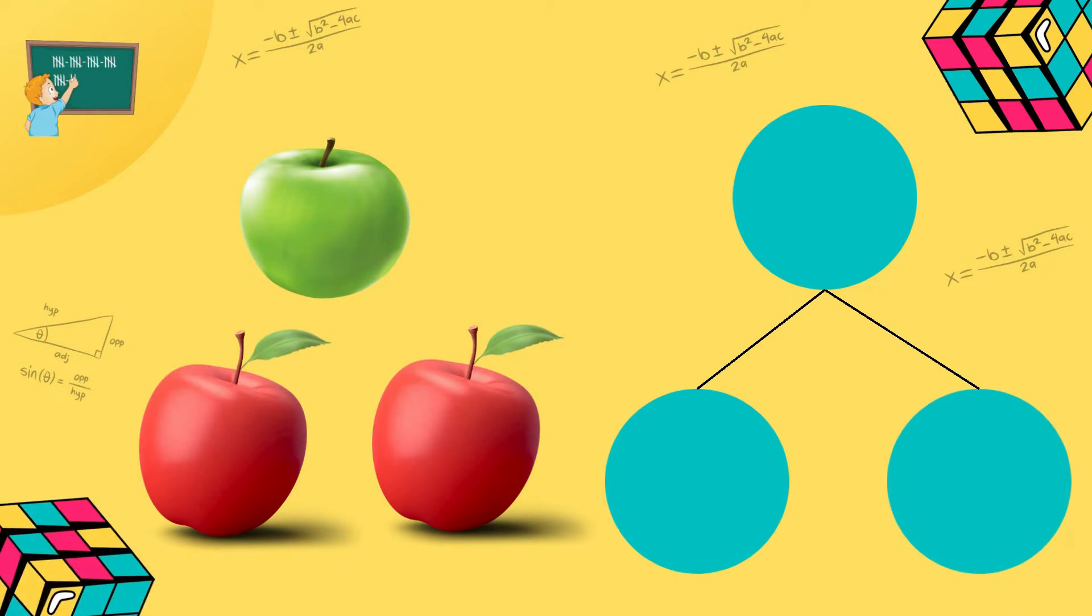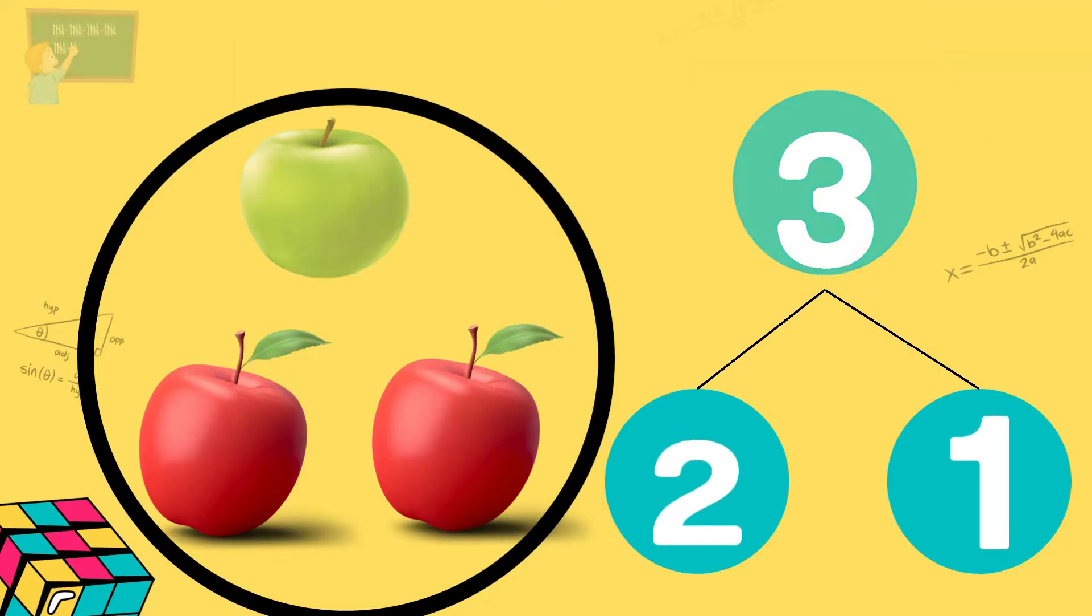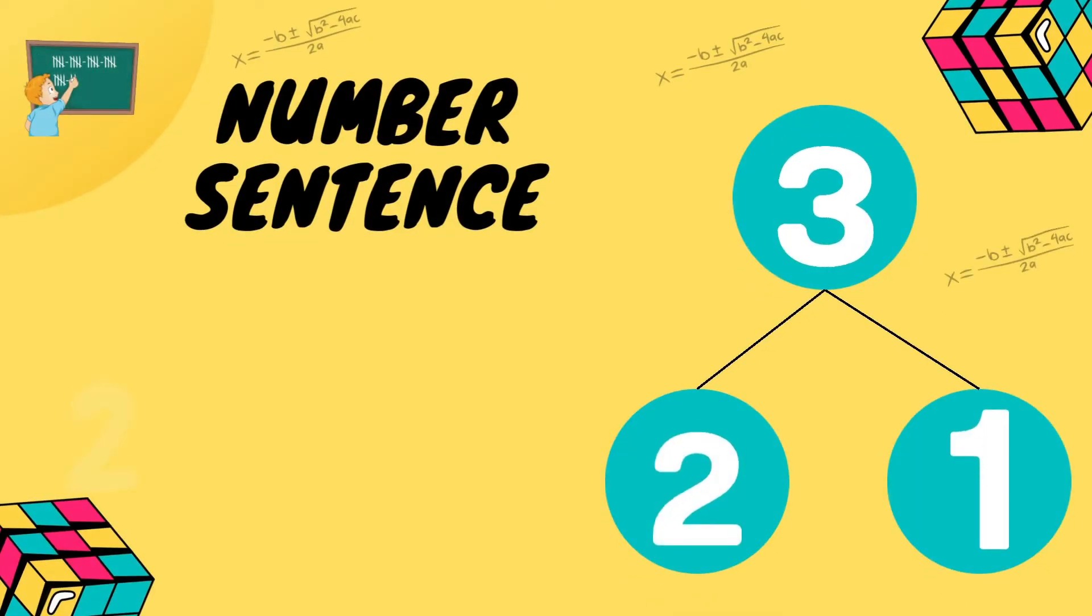Okay, we have apples. How many red apples? One, two. Very good. Two red apples. How many green apples? Yes, just one. One green apple. How many apples all together? Yes, three. Three apples. Excellent. The number sentence is two plus one equals three. Excellent job my friends!